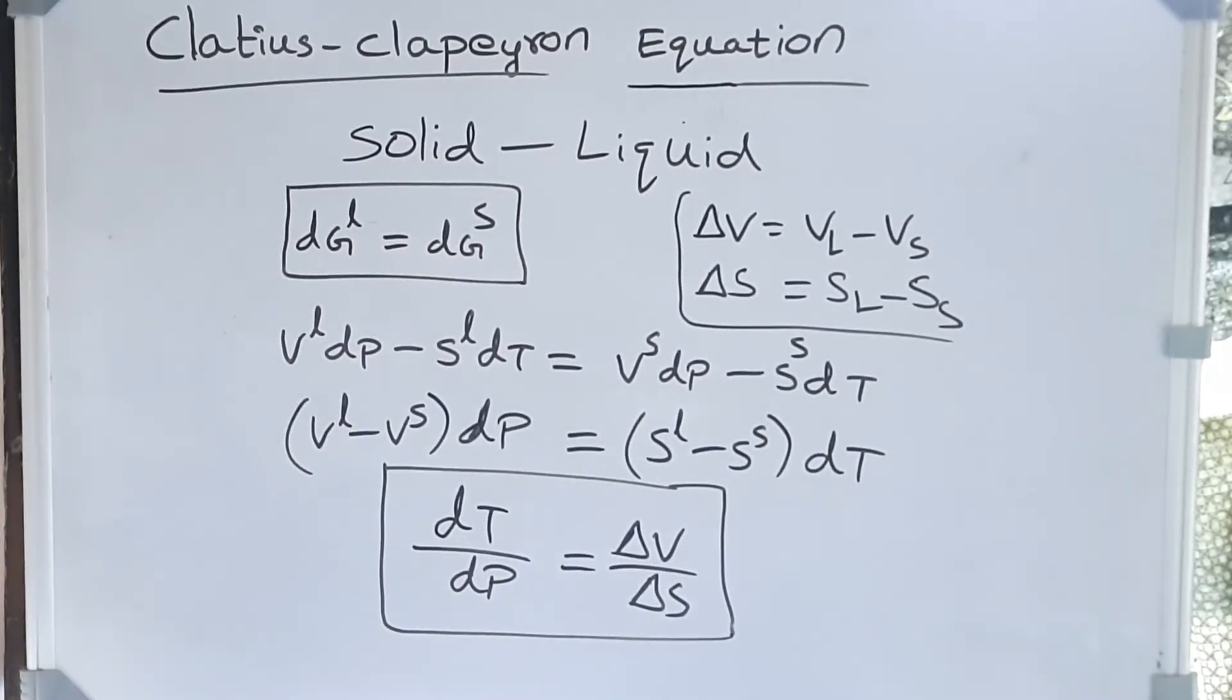Rate of change of transformation temperature with pressure is given by volume change divided by the entropy change.